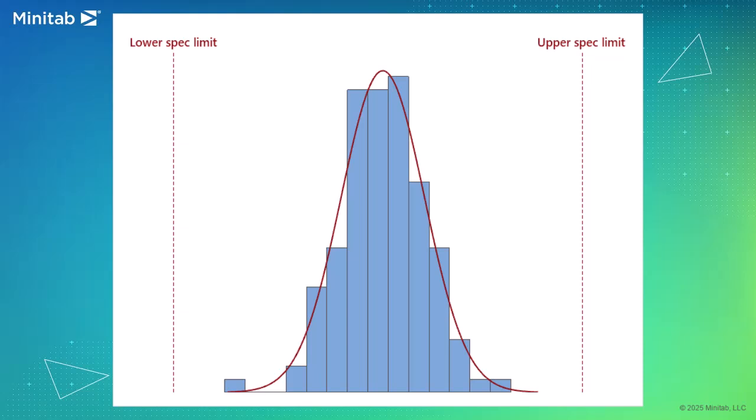The capability of a process is determined by comparing the width of the process variation to the width of the specification range. The specification range is the difference between the upper and lower specification limits, set by customer requirements.